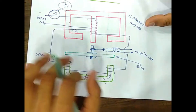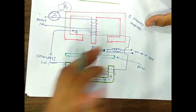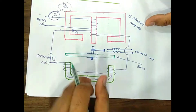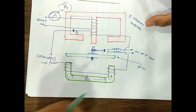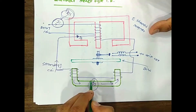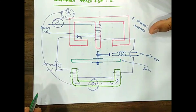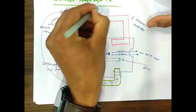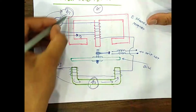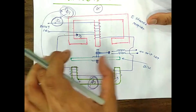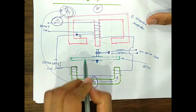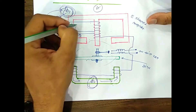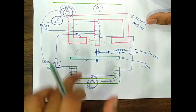Because of i1, flux phi1 is produced, and due to this flux, an EMF is induced in the secondary. This drives the current i2 through the secondary. Due to current i2, flux phi2 gets produced in the lower magnet, and this flux lags behind the main flux phi1 by some angle alpha.